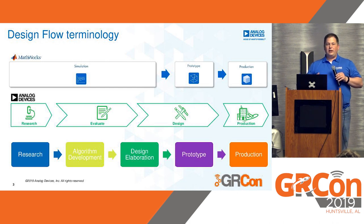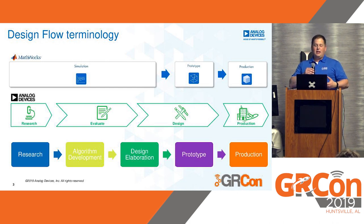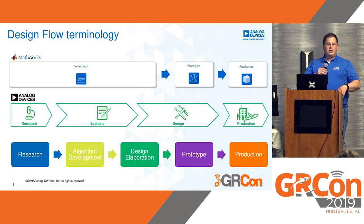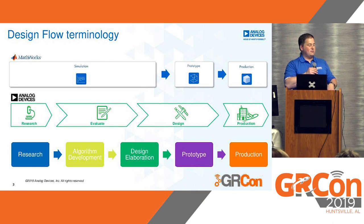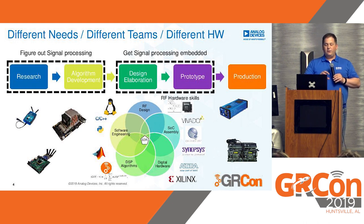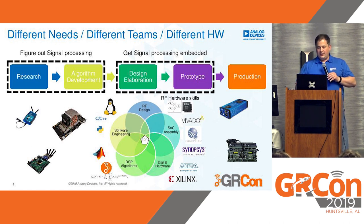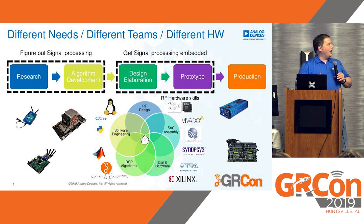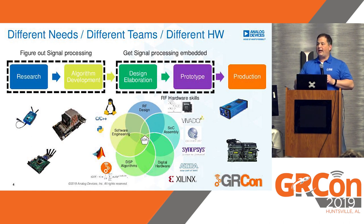When we go around and talk to radio manufacturers or even algorithm design companies, it's more of a research, algorithm development, design elaboration — where they take that algorithm, maybe try to turn it into fixed point, see how that works on their embedded device, and then finally release that into production. There are different teams, different needs, different hardware, and going from one of these steps to the next can be a challenge. It's really about figuring out the signal processing piece and then getting it embedded. How do all the different groups talk to each other and ensure they have the concepts and optimizations they need when they make these steps?